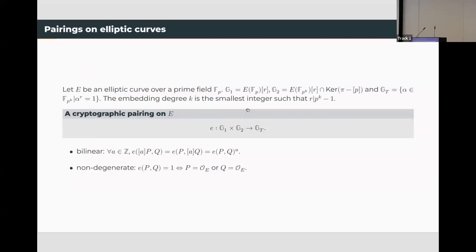I first give a brief introduction of pairings and pairing-friendly curves. A cryptographic pairing is a bilinear and non-degenerate map of the form G1 times G2 to GT. The input groups are subgroups of an elliptic curve. The output group is a subgroup of a finite field FP^{2K}. The integer K is the embedding degree of this curve.